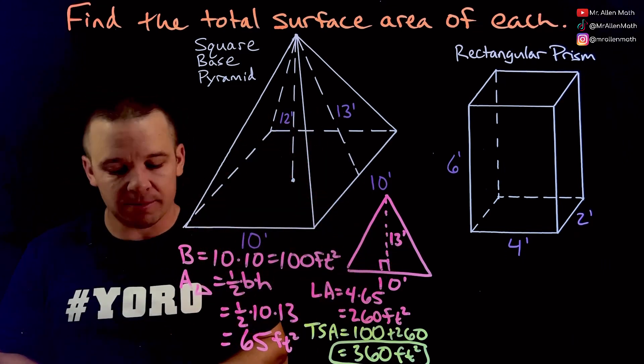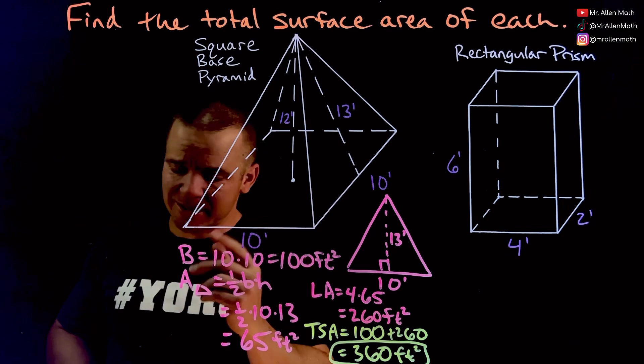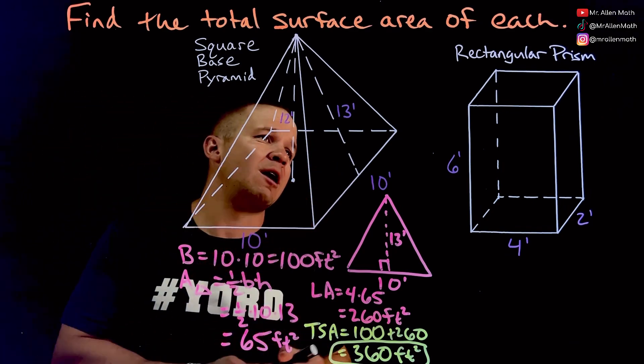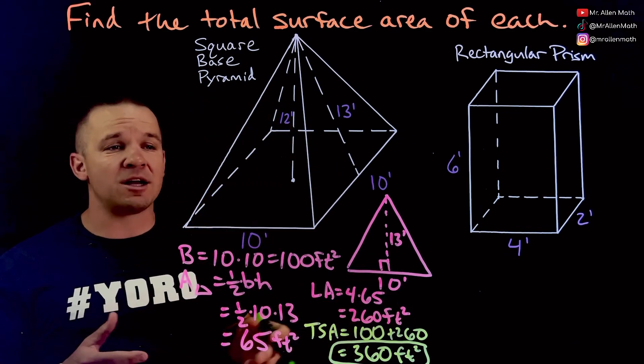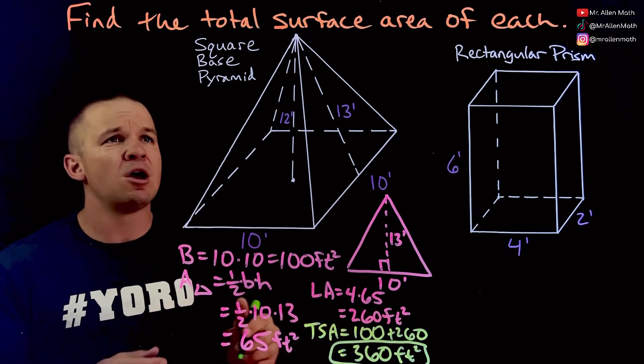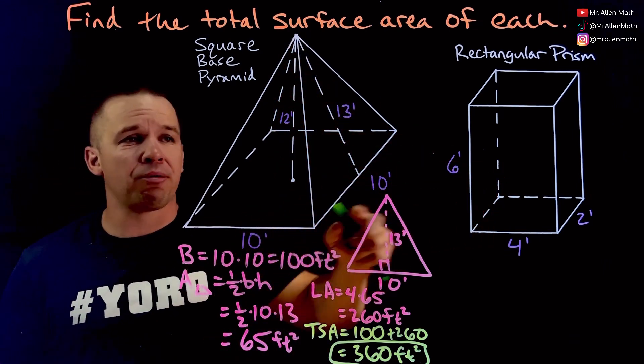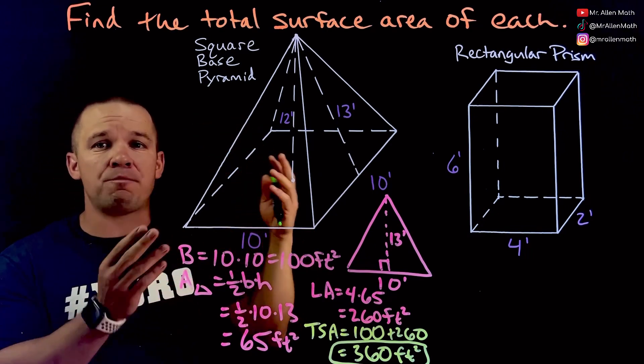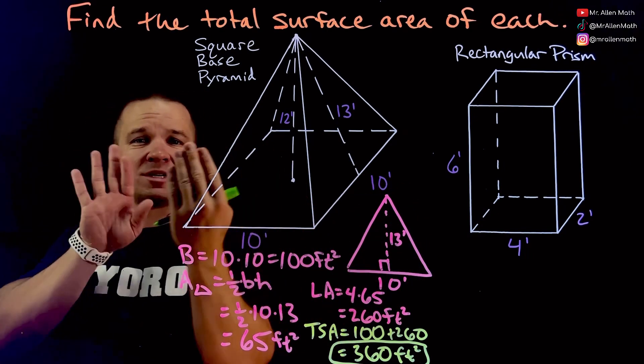Nice, excellent, fantastic. Recap: find the area of the square, find the area of the triangles, add them all together, that's total surface area. All right rectangular prism, this means that all my faces are rectangles or squares. It's a prism, whereas a pyramid comes to a point, a prism has two of the same bases.